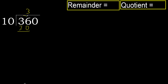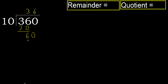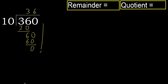Subtract: 36 minus 36. Next — 60. Then multiply by 6: 60 is not greater. Ok, subtract. Next.